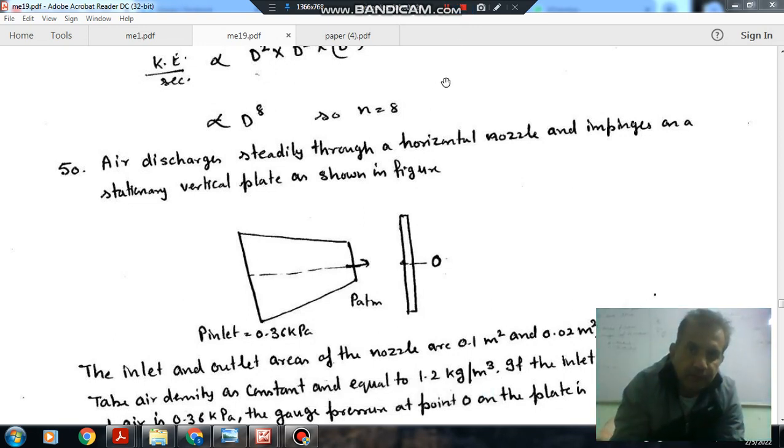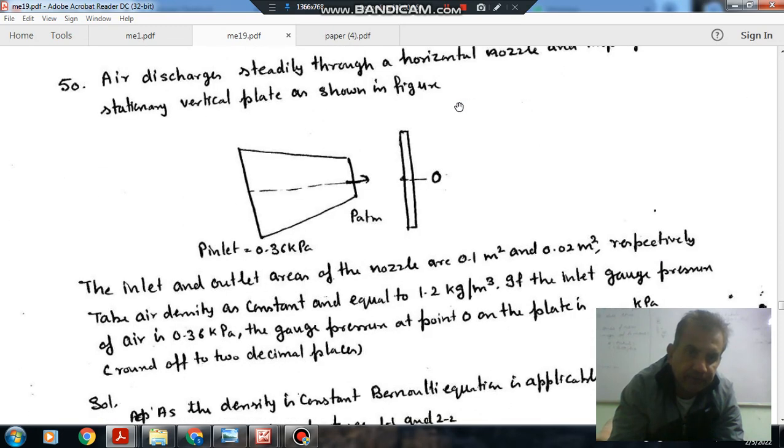Hello, welcome again. We are solving GATE 2020 mechanical engineering paper 1, question number 15. Air discharges steadily through a horizontal nozzle and impinges on a stationary vertical plate, as shown in the picture.